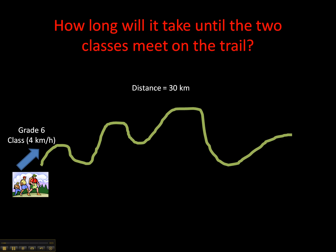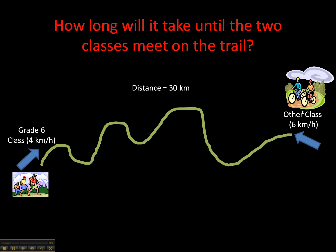The question on page 24 asks how long it will take until the two classes meet on the trail. The two classes are a class of grade 6 students who are hiking at about 4 km an hour. The total distance of the trail is 30 km, and on the other side, leaving at the same time, is another class of students riding their bikes at about 6 km an hour.